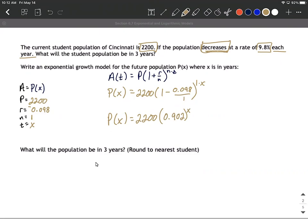Next, we're going to know what's that population going to be in three years. So they tell us a value for our time, which they've told us is X. So we're going to fill in three into our model. So P of three is 2200 times 0.902 raised to the third power,